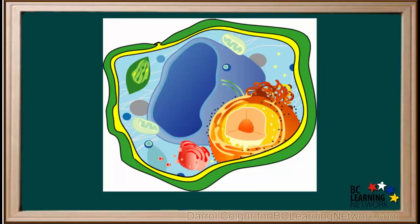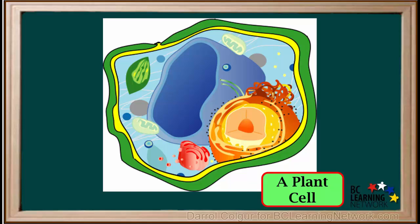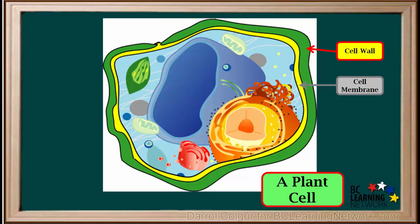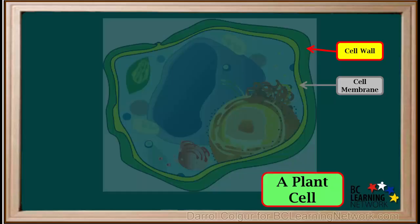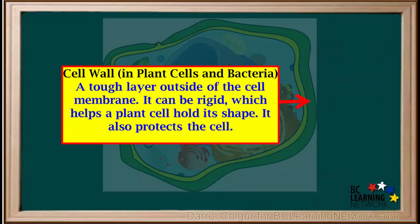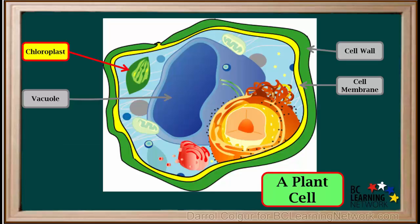So far, we've been looking at animal cells. Plant cells can have most of the parts animal cells have, but they also have a couple more. Like animal cells, plant cells have a cell membrane surrounding them. But plant cells also have a rigid cell wall outside their cell membrane. Cell walls surround plant cells and bacteria. A cell wall is a tough layer outside the cell membrane. It can be rigid, which helps a plant hold its shape, and also protects the inside of the cell. A green colored organelle found in plant cells, but not in animal cells, is called a chloroplast.